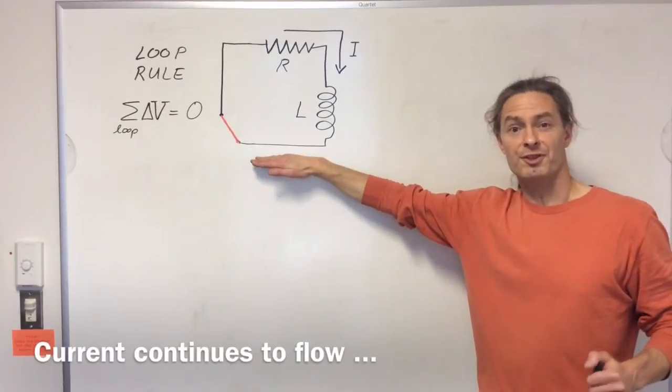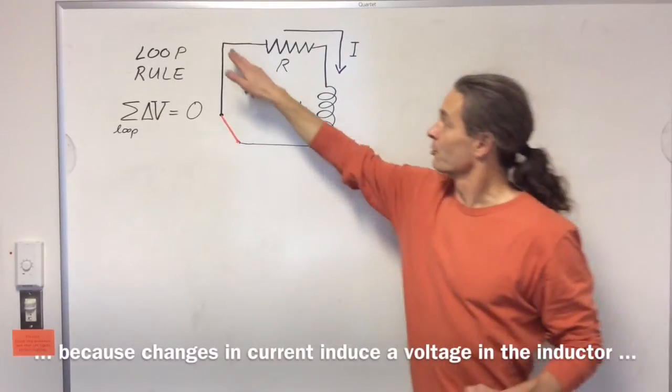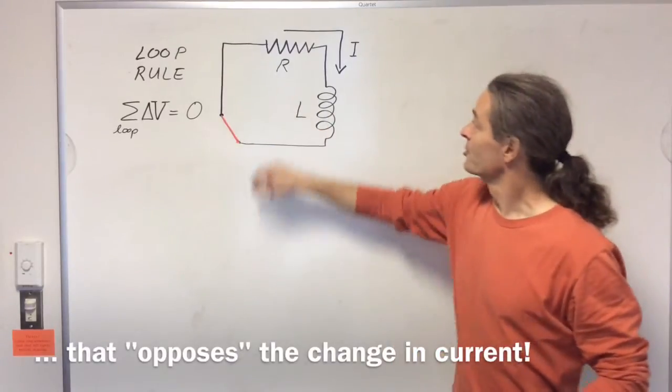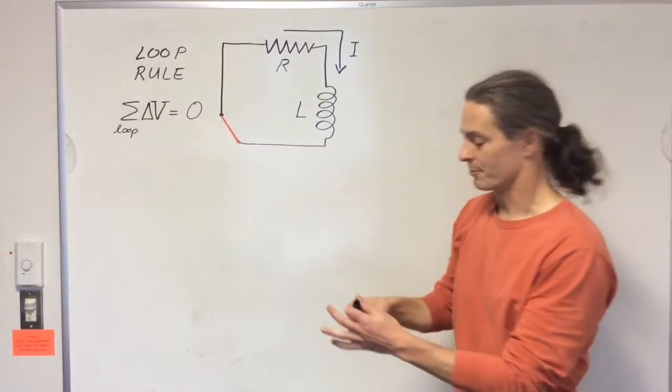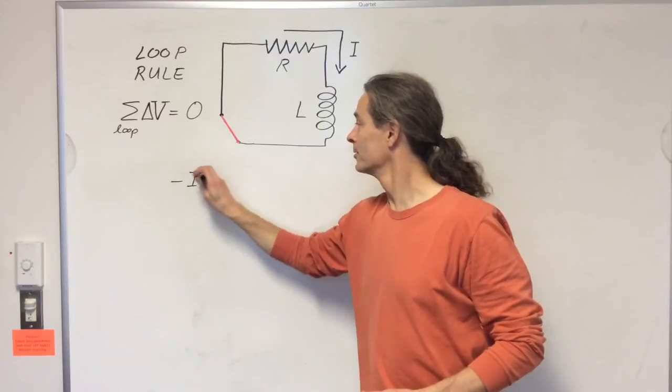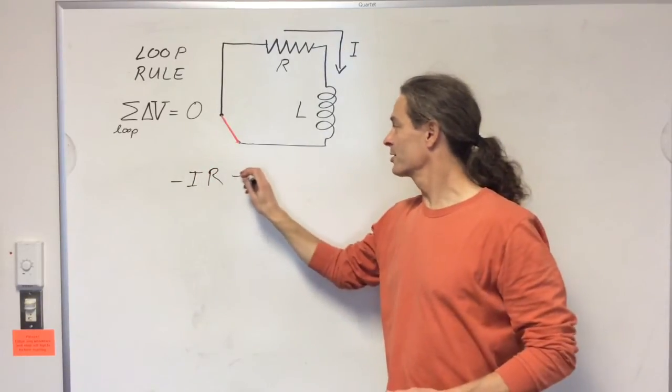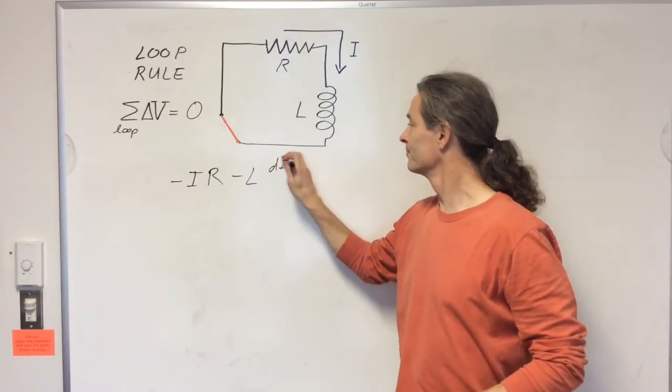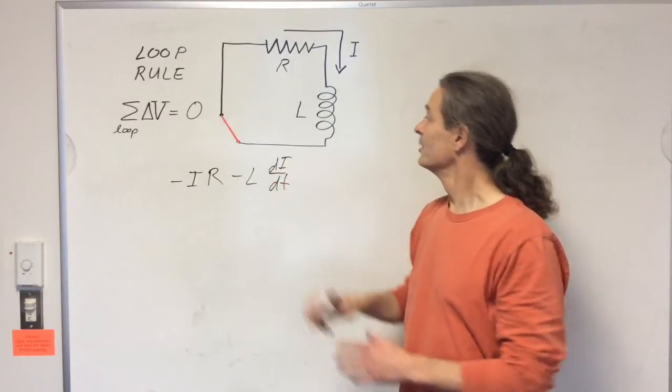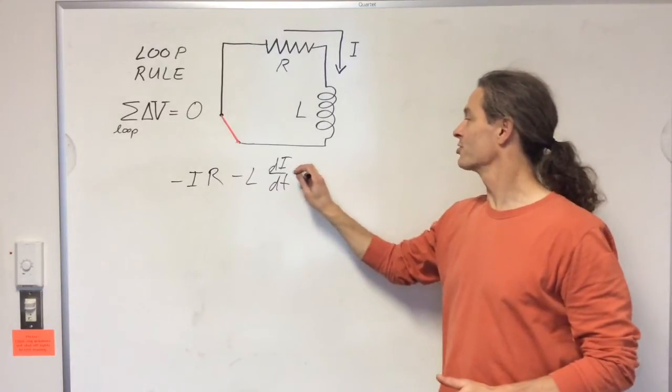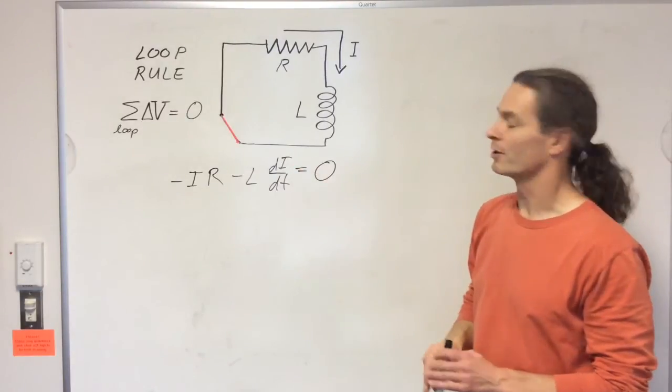So let's apply the loop rule to the circuit that we have left. So we're going to start here and follow the current around the circuit. We've got the voltage drop across the resistor, the change of potential across the inductor, and that's all we have. So the sum of those changes in potentials around the loop must be zero according to the loop rule.